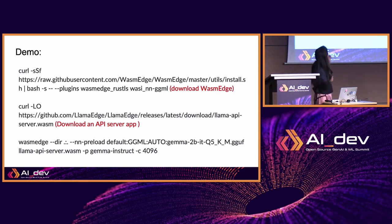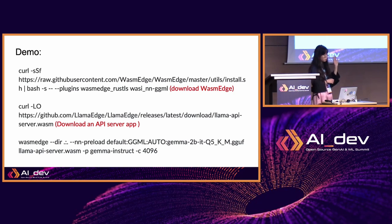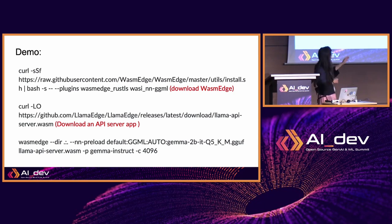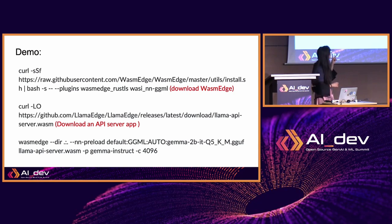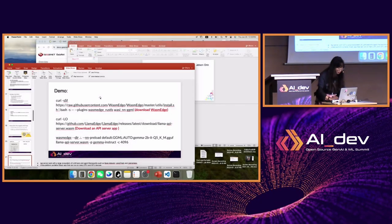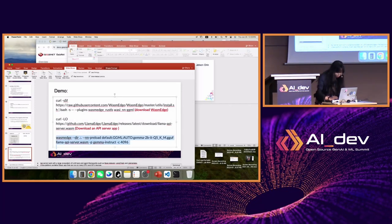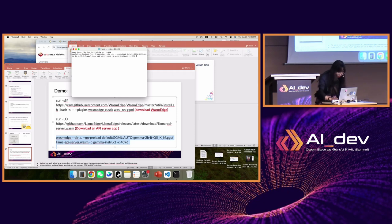For the demo, you first install WasmEdge, then install the API server app — it's also a WASM file — and then you run the command. You also need to download the model itself. The next open-source large language model we're going to try is Gemma 2B. The 4096 at the end is the context length. Since I've already completed the first two steps and downloaded the model, I'll just try this Gemma 2B model by typing in this command.